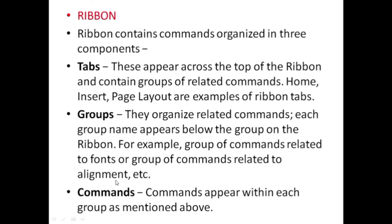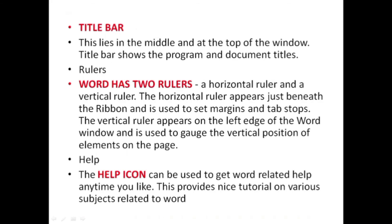The next is the ribbon. A ribbon contains commands organized in three components: tabs, groups, and commands. Tabs appear across the top of the ribbon and contain groups of related commands — for example, Home, Insert, and Page Layout are ribbon tabs. Groups are organized related commands, with the group name appearing below the group on the ribbon, such as the Font group or alignment group. Commands appear within each group. The title bar is found at the top of the window, in the middle, and displays the program and document title.